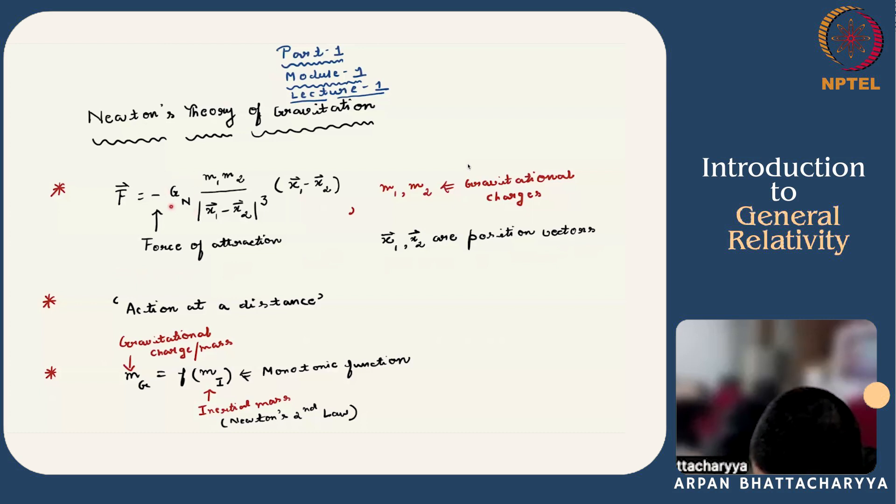G Newton is a universal constant; we call it Newton's constant. This is a force of attraction, as indicated by the negative sign. This F is known as action at a distance because the effect propagates instantaneously, and we know that it contradicts the principles of special relativity.